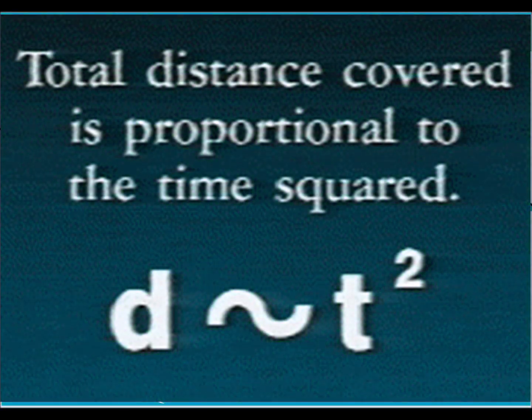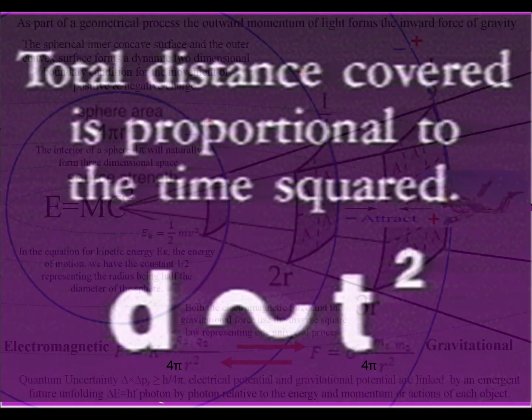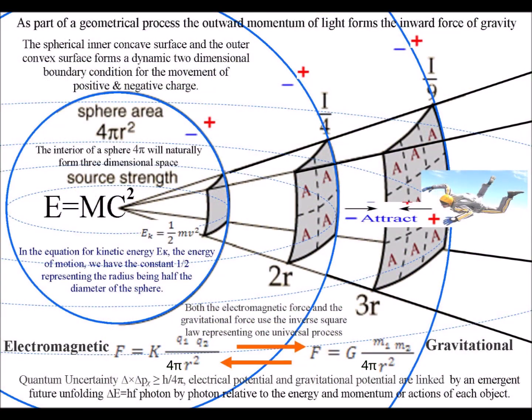This formed a base for Newton's inverse square law of gravitational and electromagnetic fields. But neither Galileo nor Newton gave a reason for the square-cube law and the inverse square law. And this is where physics is today. There is no explanation for these fundamental laws of the universe.